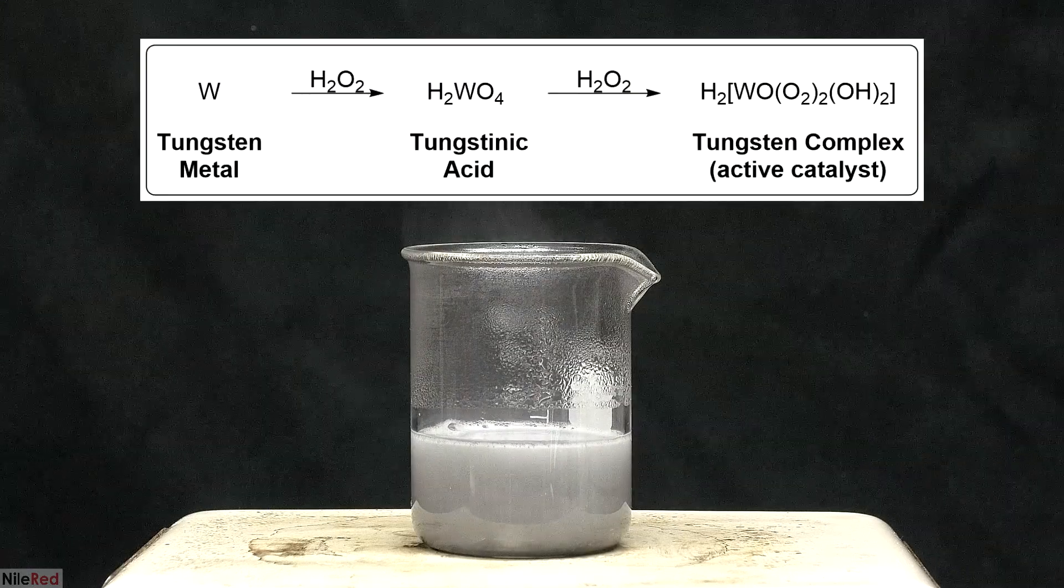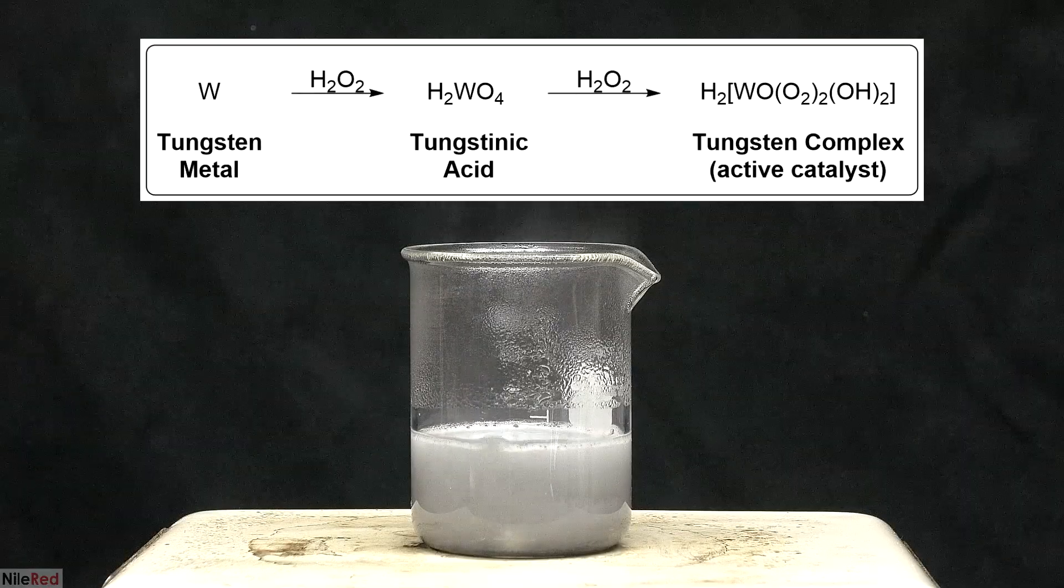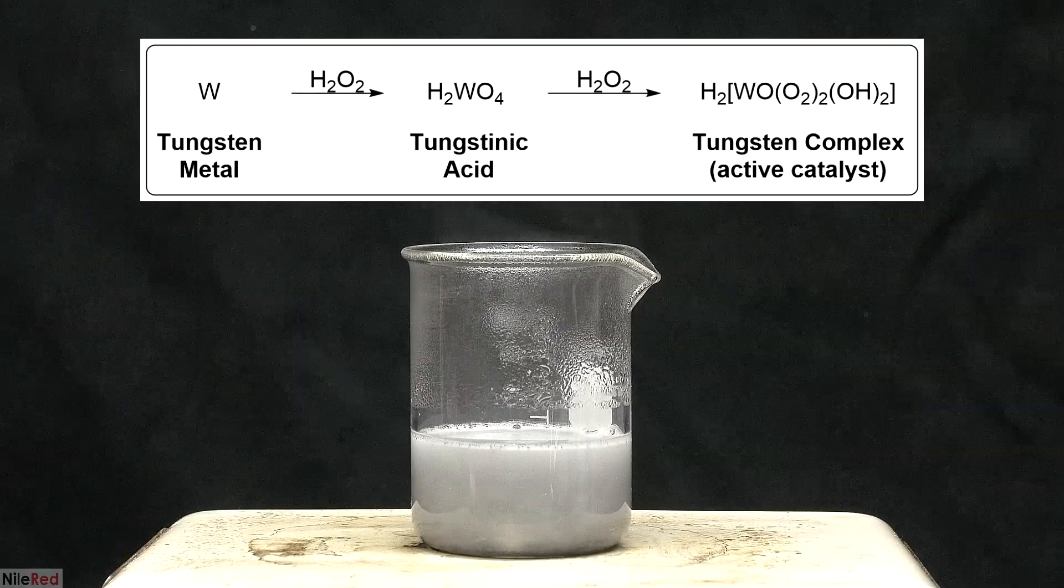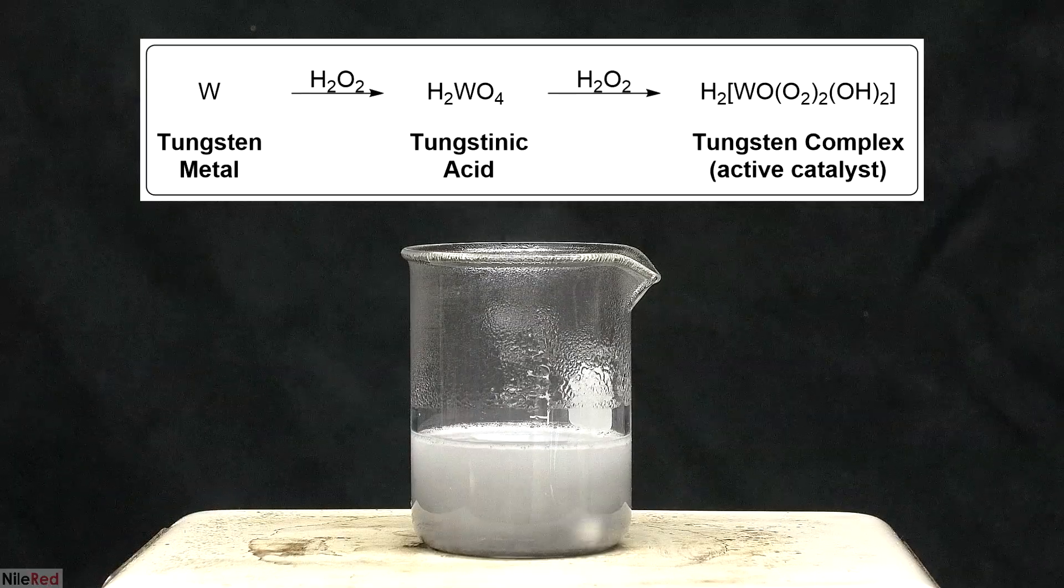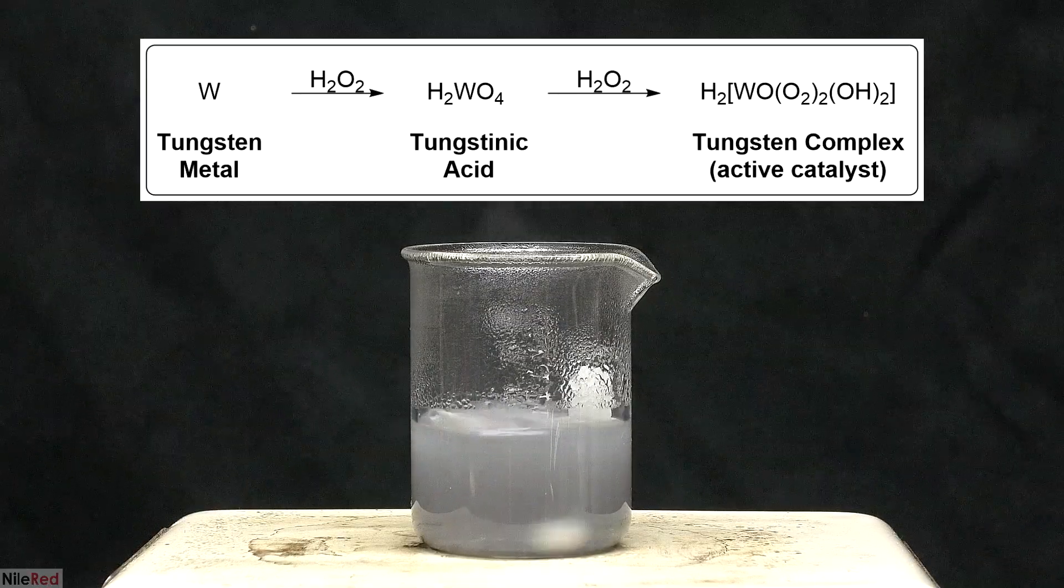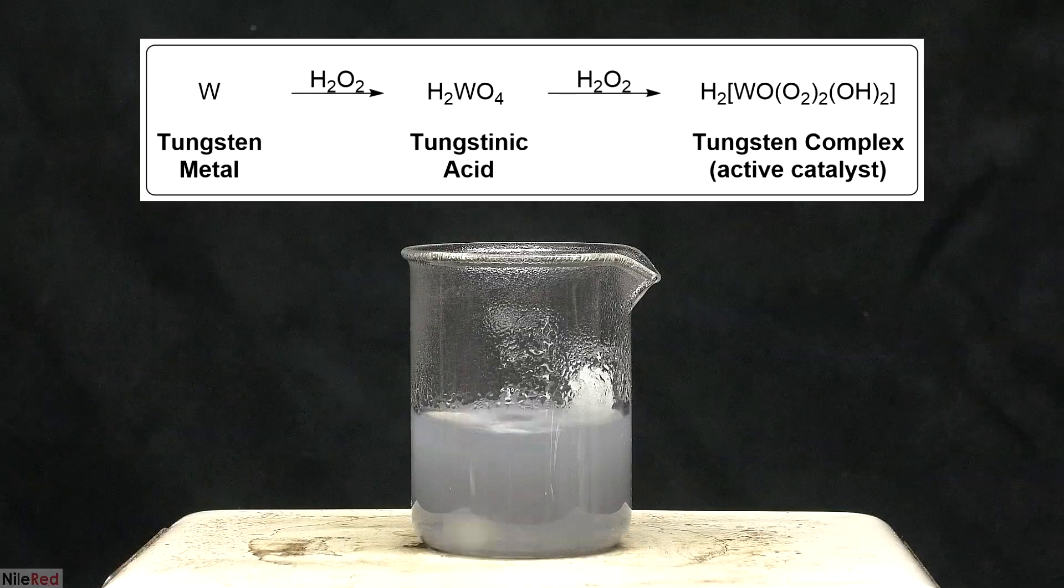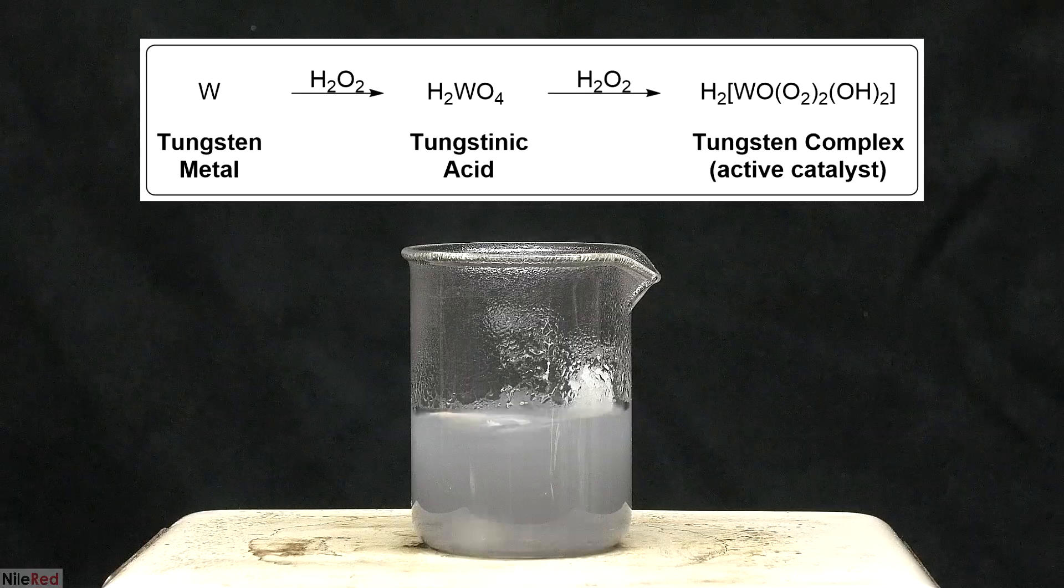What we have going on here is hydrogen peroxide reacting with the tungsten metal to form tungstenic acid. Tungstenic acid is normally insoluble in water, but in the presence of peroxide, it forms a water-soluble complex. As far as I know, this complex doesn't really have a name, but it's the active catalyst for the reaction.